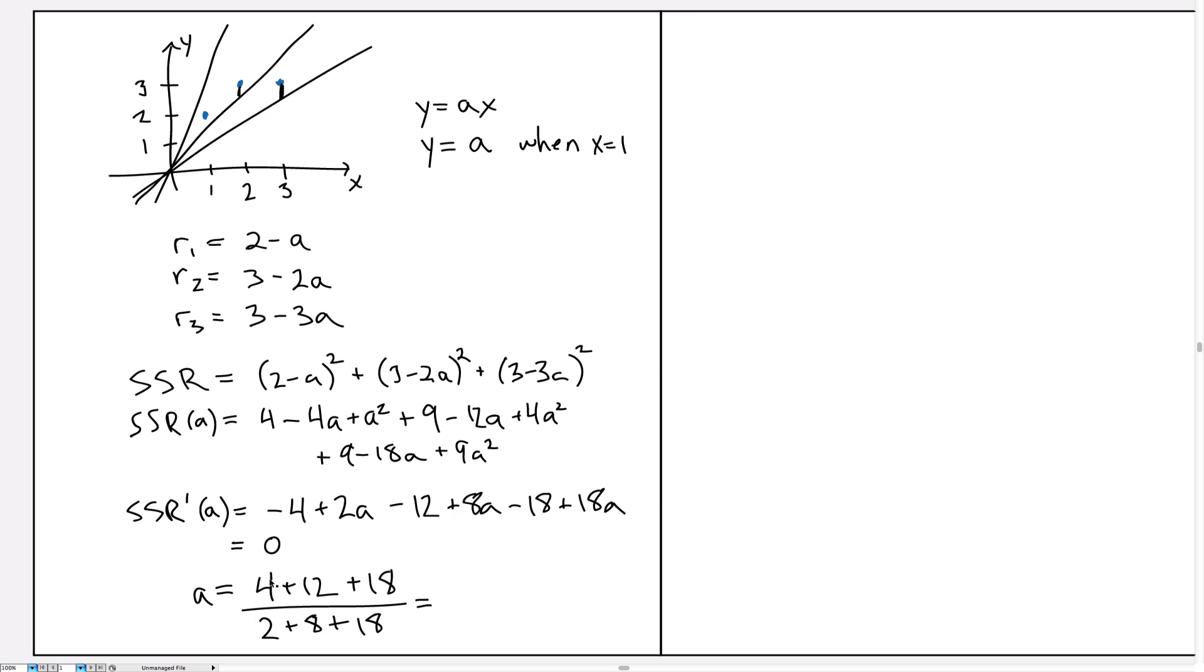So this first one, this 4, came from the minus 4A, which was twice the product of the X and Y values. So that's 2 times 1 times 2 plus, and where did the next one come from? This 12 came from minus 2A times 3 was minus 6, and we double that because there's 2 and we multiply out the binomial term. So that is 2 times 2 times 3 plus, and the last one is 3 times 3 times 2, so 2 times 3 times 3.